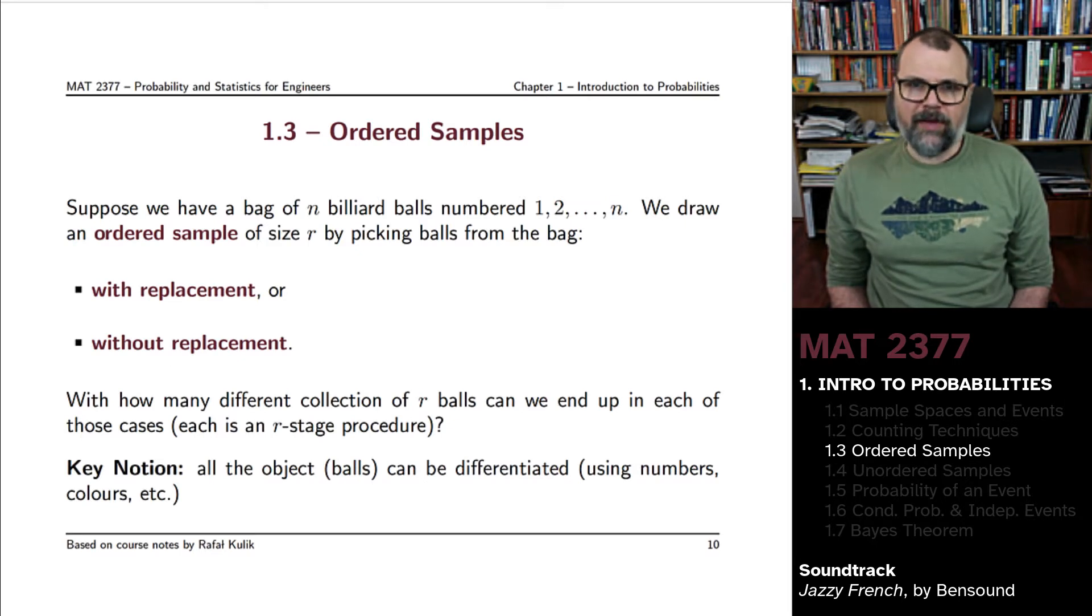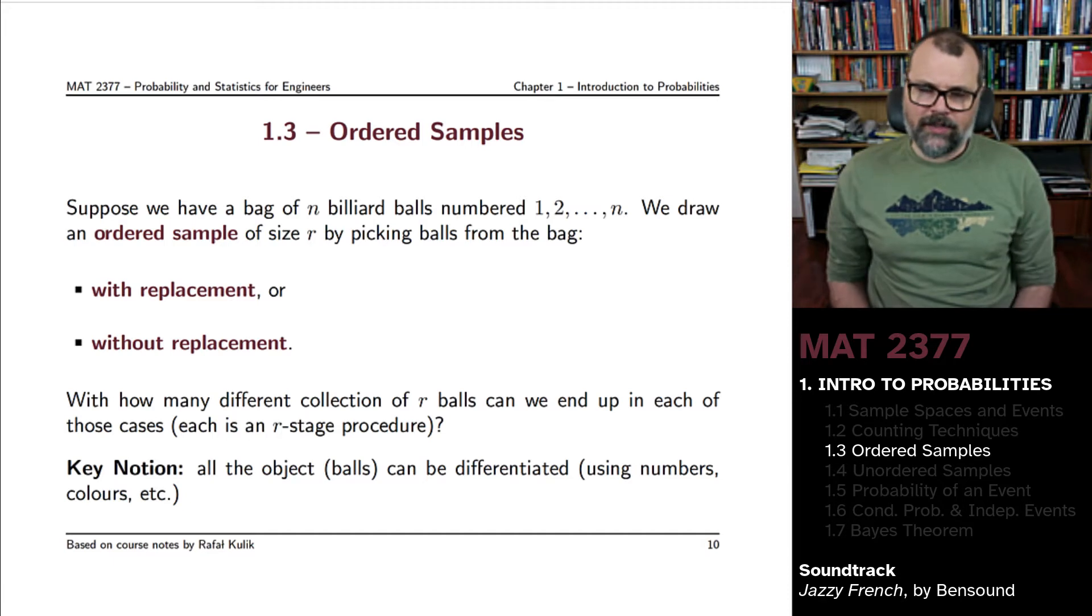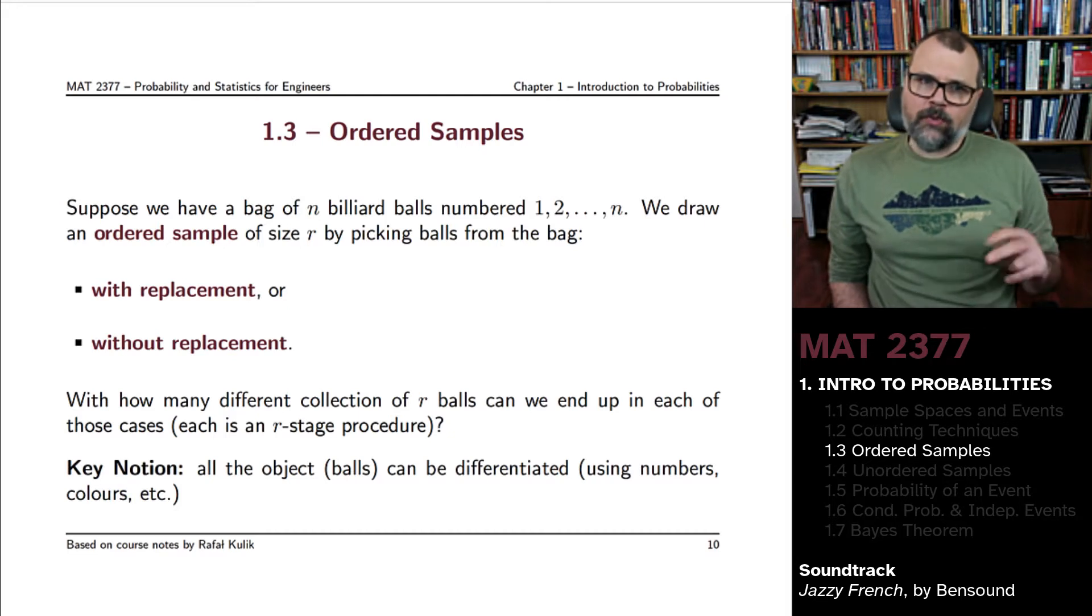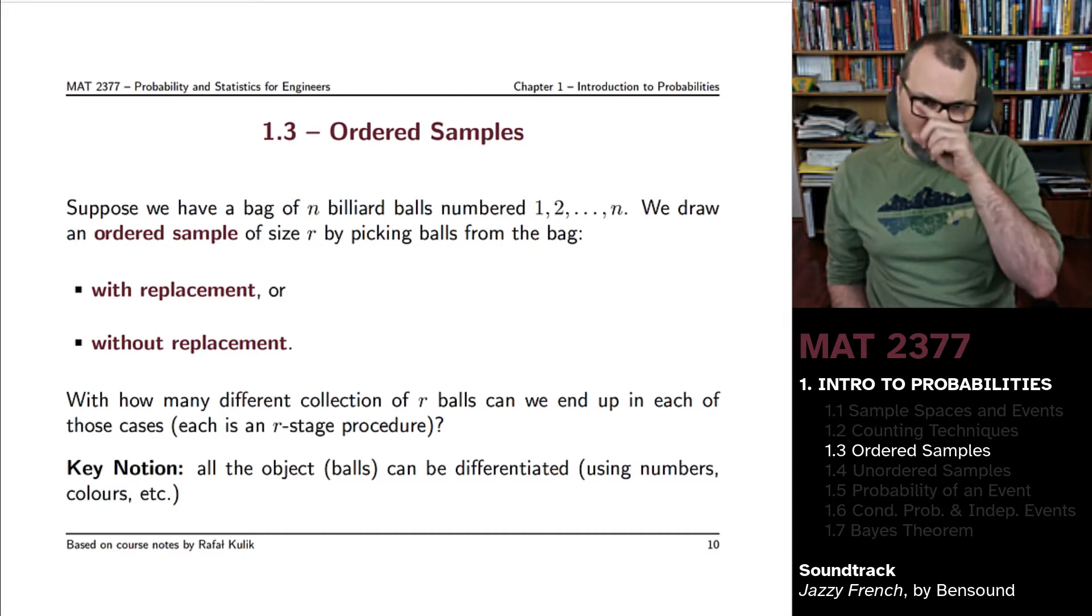You can have a bag that contains N pool balls in there, perhaps numbered 1 to N. There's two ways in which we can draw an ordered sample of size R.